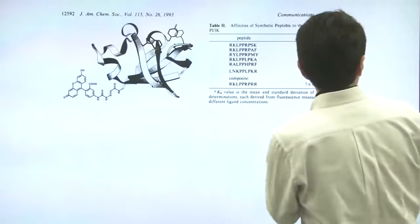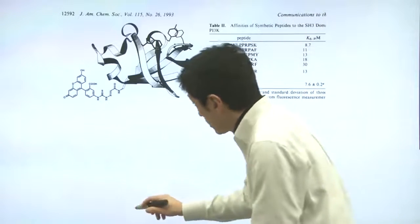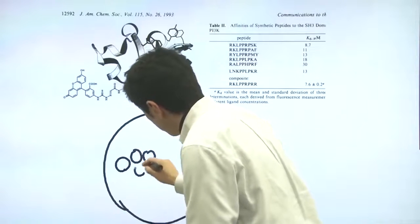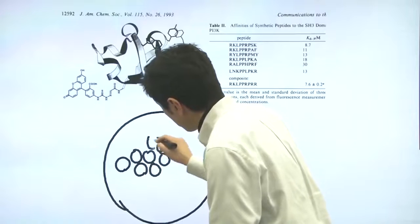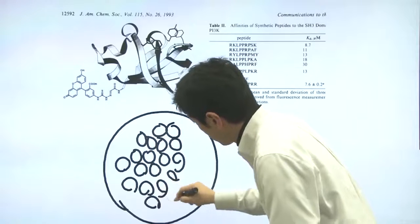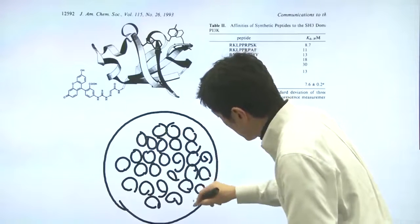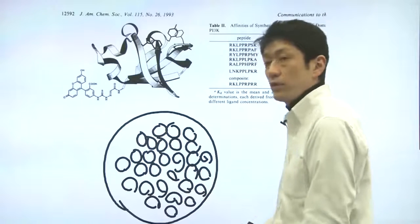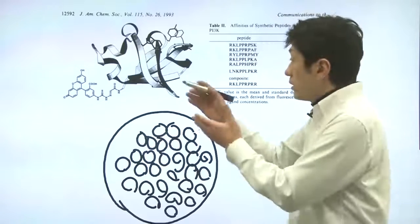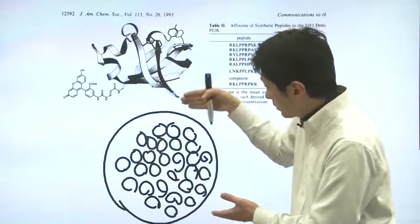Under the microscope, you can see the peptide beads like this. Remember, each one of these beads has a different peptide. Then he added this fluorescent protein, fluorescent SH3 domain, to the beads sample.